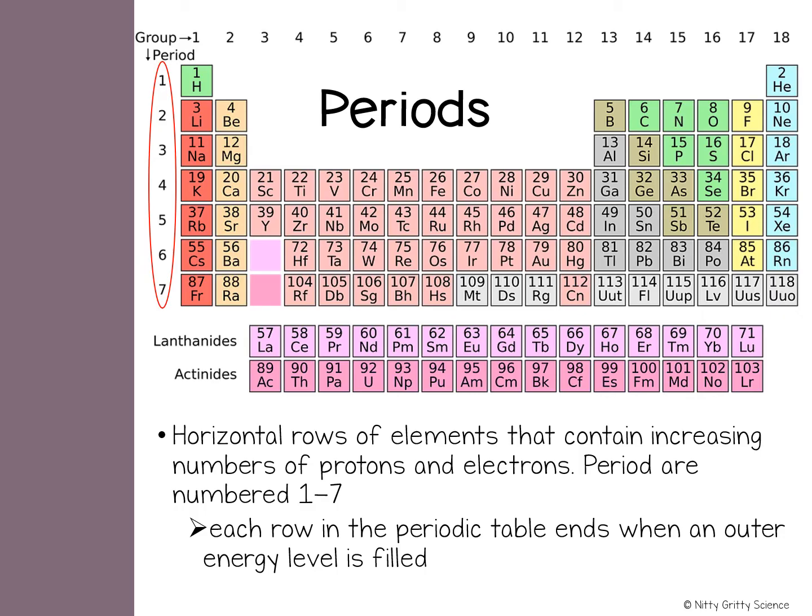There's one particular colored region that makes a staircase down the periodic table. The elements on the right side of that staircase are classified as nonmetals,